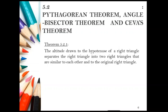Next we have 5.2: Pythagorean Theorem, Angle Bisector Theorem, and Ceva's Theorem. We look into 5.2.1.